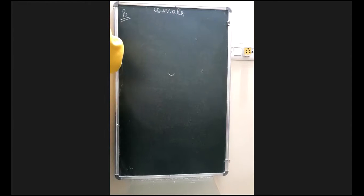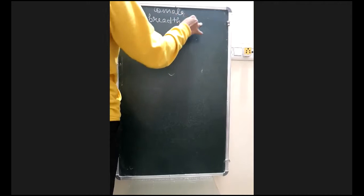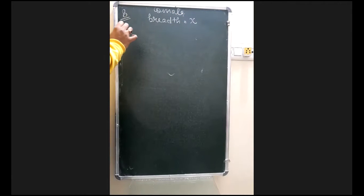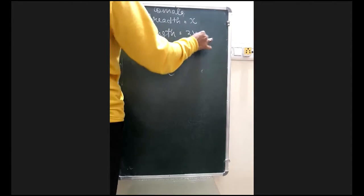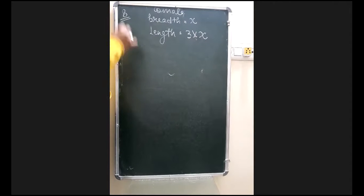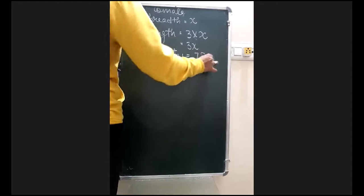MCQ 8: A rectangle has a perimeter of 72 meters and the length is thrice its breadth. Let breadth = x, so length = 3x. The perimeter is given as 72, so we apply the formula.